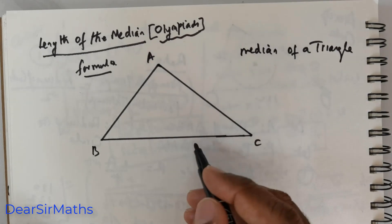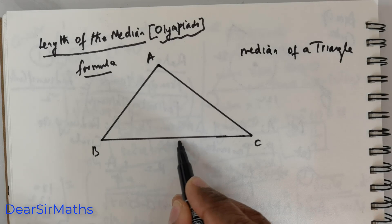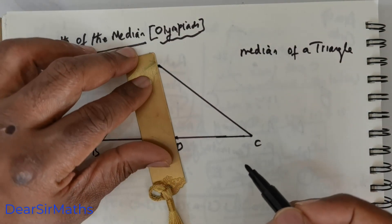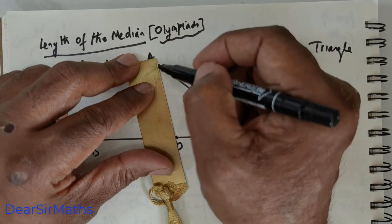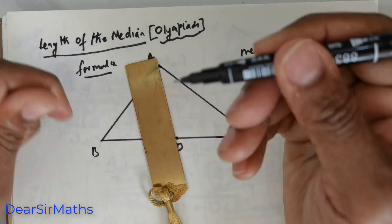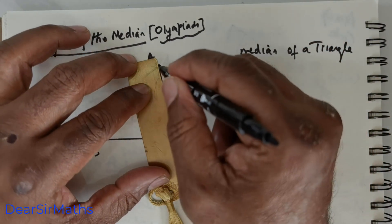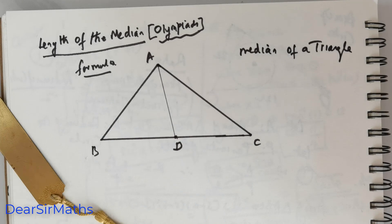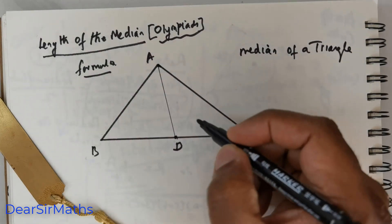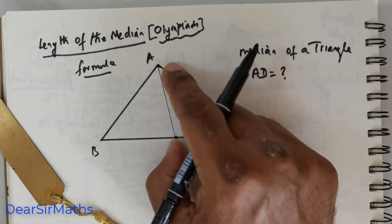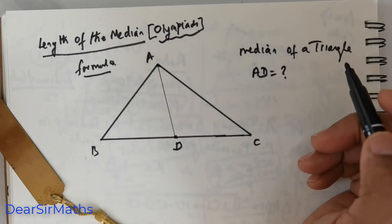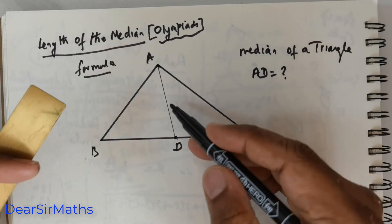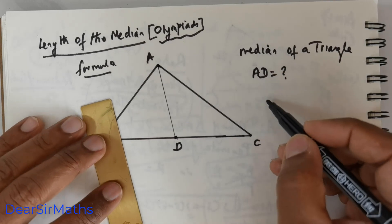If you were to take this side, the midpoint has to be located. So if I take this to be the midpoint D, and if you were to connect the vertex from A to D, then that is actually called the median. So AD is a median. Like that, you can have a median from B, a median from C. So there are more than one median for a triangle. Now we are interested in finding the length — what is the length of this median?